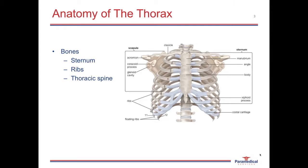Looking at the anatomy of the thorax, we start with the skeleton or bone structure. In the most anterior portion of the body in the midline we have the sternum, which is divided into three sections. The manubrium, at whose most superior point we have the sternal notch where the clavicles articulate with the sternum. The angle of Louis separates the manubrium from the body of the sternum, and at the most inferior portion of the body of the sternum we have the xiphoid process, also called the xiphoid sternum.